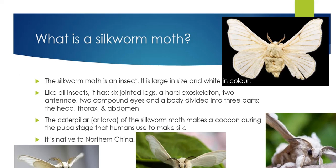Like all insects, the silkworm moth has six legs, a hard exoskeleton, two antennae, two compound eyes, and a body divided into three parts: the head, the thorax, and the abdomen.